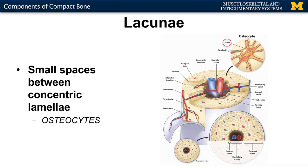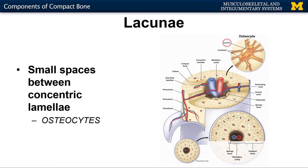Within that extracellular matrix, or within the concentric lamellae, you'll have these little holes, or lacunae. Lacunae actually means 'lake' in Latin. So you can think of these little lakes within the concentric lamellae that are going to have osteocytes, or those mature cells, sitting within. Here's a close-up — you'll have the osteocytes sitting in this lacunae, or this pit-like region.